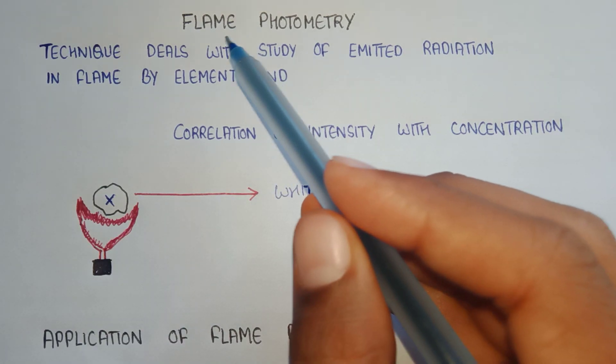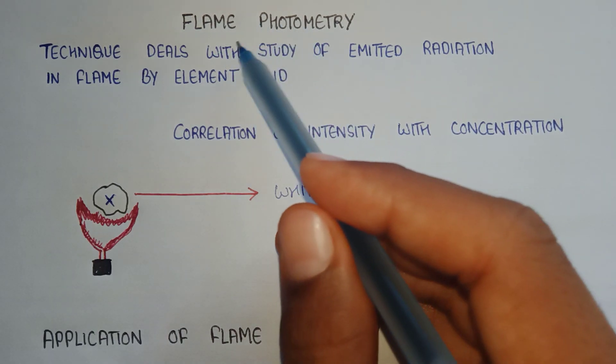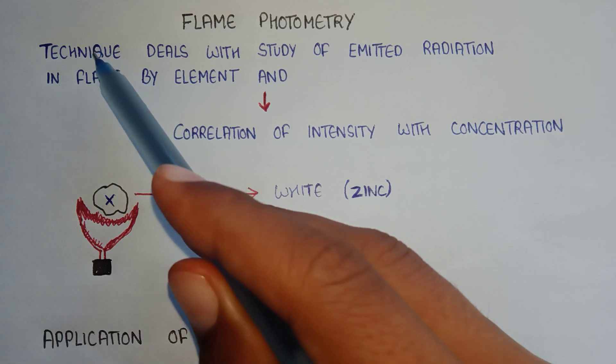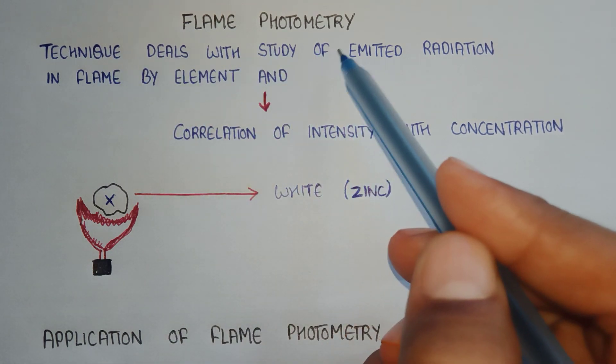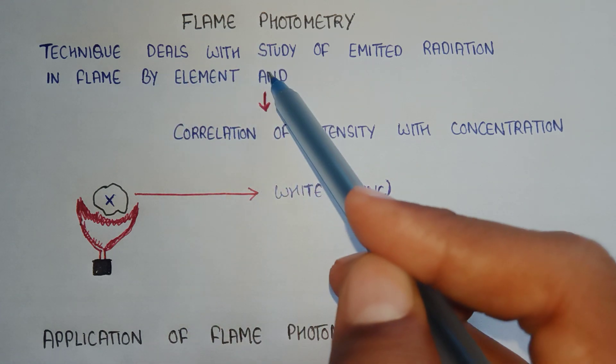Flame photometry. In this video we will learn about flame photometry. First, coming to the definition. It is a technique that deals with study of emitted radiation in flame by element and its correlation of intensity with concentration.